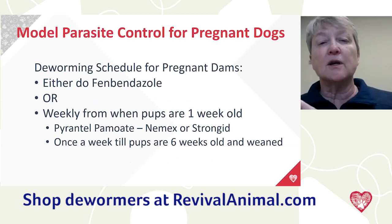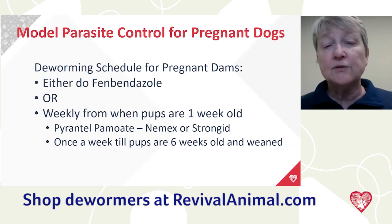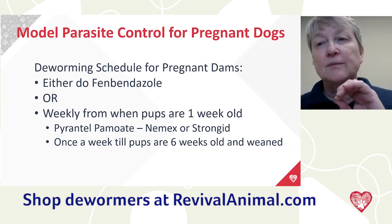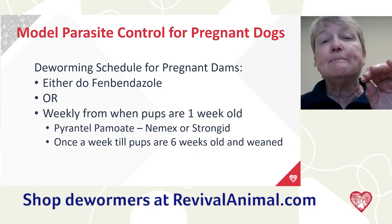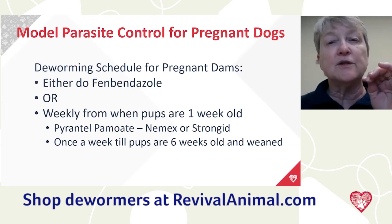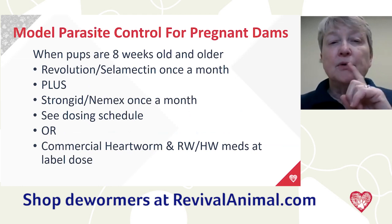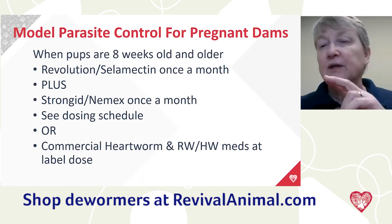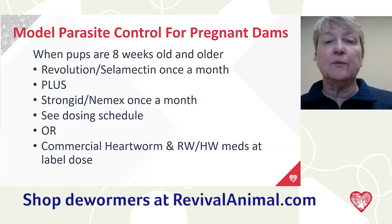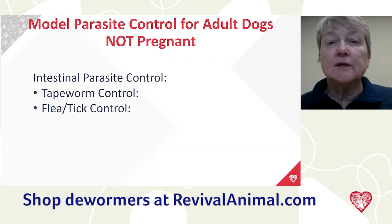For pregnant dams: you can either do the fenbendazole protocol we've discussed, or from when the puppies are a week old, use Nemex or Strongid, then fenbendazole at six weeks for both the bitch and puppies on the same day. The CAPC — Companion Animal Parasite Council — at CAPCVet.org is a great resource for all of this information. Once her puppies are eight weeks and weaned, you can put her on Revolution or selamectin once monthly plus Nemex or Strongid, since Revolution does not control intestinal roundworms or hookworms in dogs.